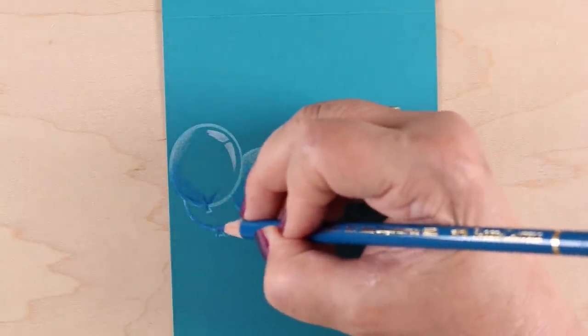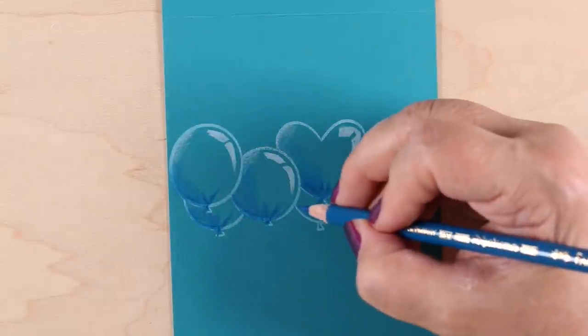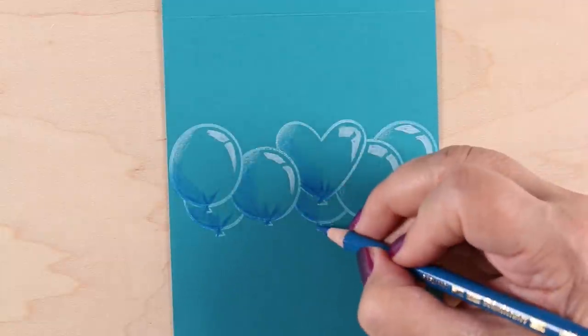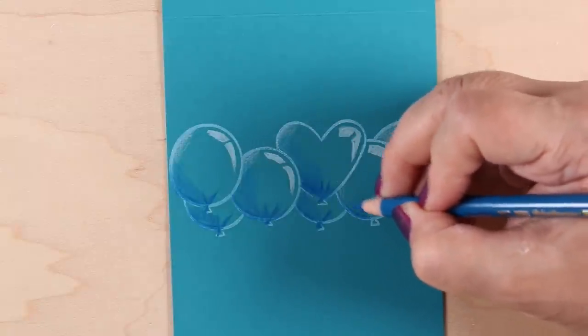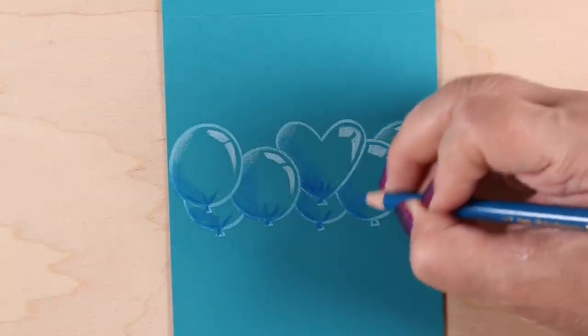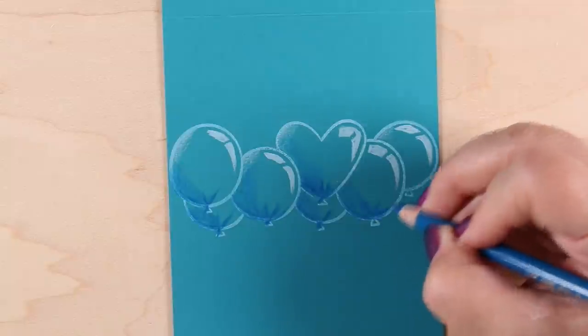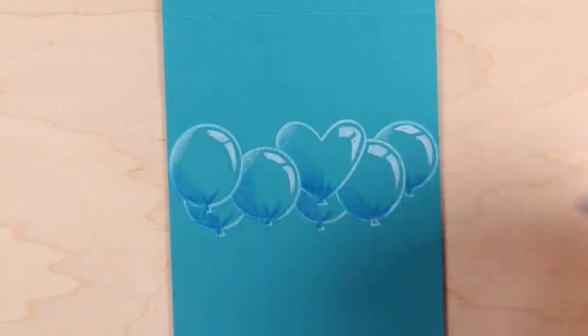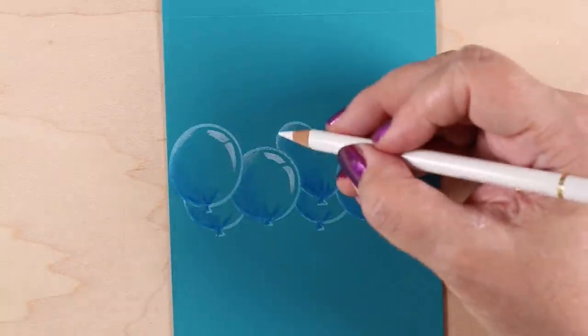You could just put the highlights on in the white that I've already done and leave it at that and they would be nice really simple graphical types of balloons. Just add some strings on them and you're done. Really easy. Or you can do what I'm doing, which is the overachiever method and put in more color. So adding my shadows onto each one of the balloons and even adding a little bit into the little part that hangs down the bottom, down below the knot that you would tie in the balloon.